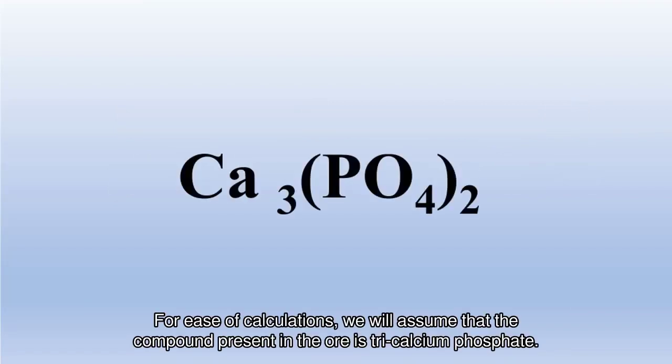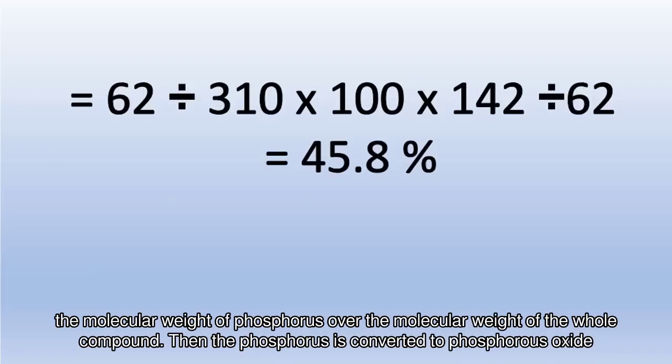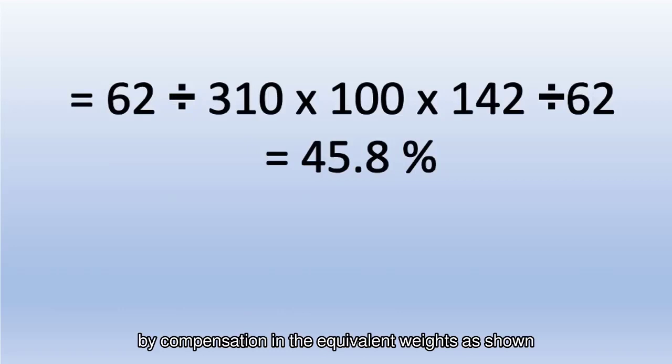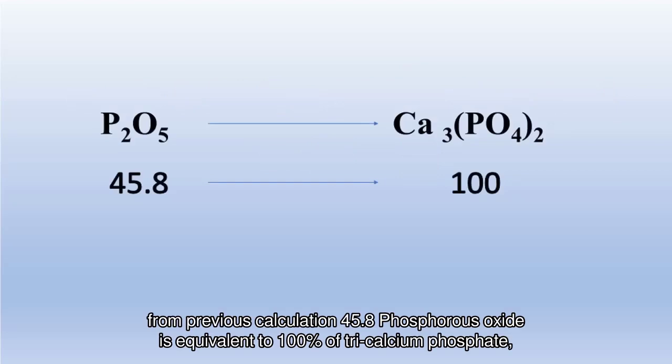For ease of calculations, we will assume that the compound present in the ore is tri-calcium phosphate. The percentage of phosphorus oxide present in tri-calcium phosphate is equal to the molecular weight of phosphorus over the molecular weight of the whole compound. The phosphorus is then converted to phosphorus oxide by compensation in the equivalent weights. From this calculation, 45.8% phosphorus oxide is equivalent to 100% of tri-calcium phosphate.